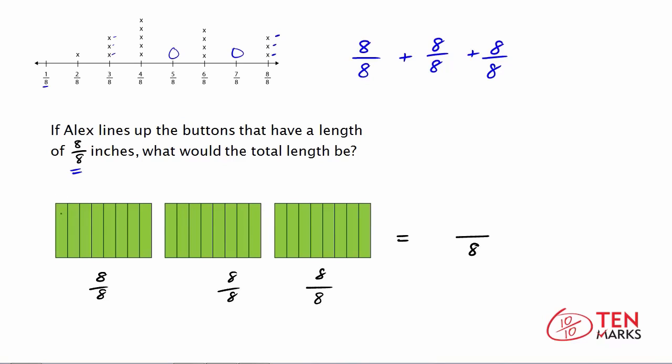So now let's count. There are 1, 2, 3, 4, 5, 6, 7, 8, 9, 10, 11, 12, 13, 14, 15, 16, 17, 18, 19, 20, 21, 22, 23, and lastly 24. So there are 24 equal parts.